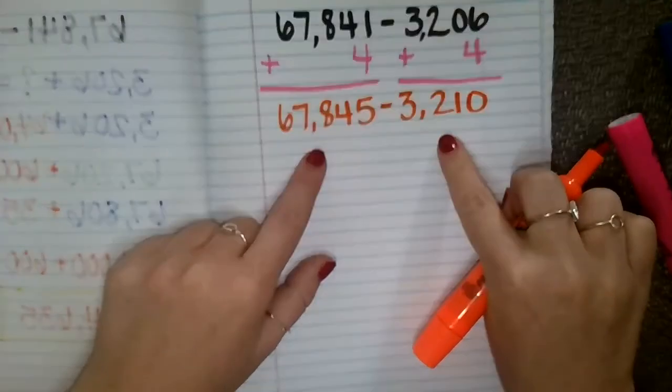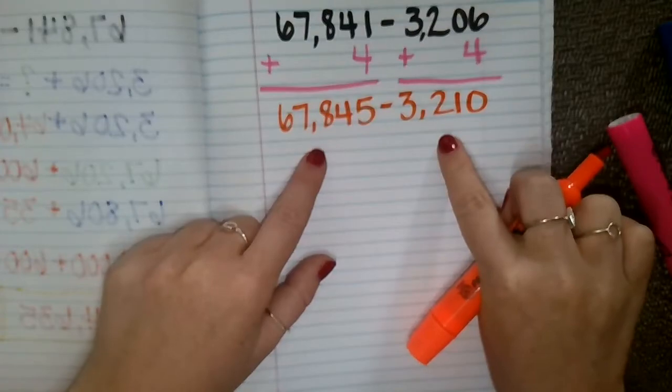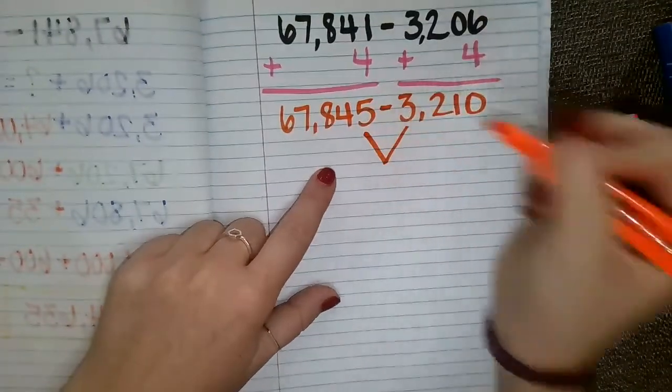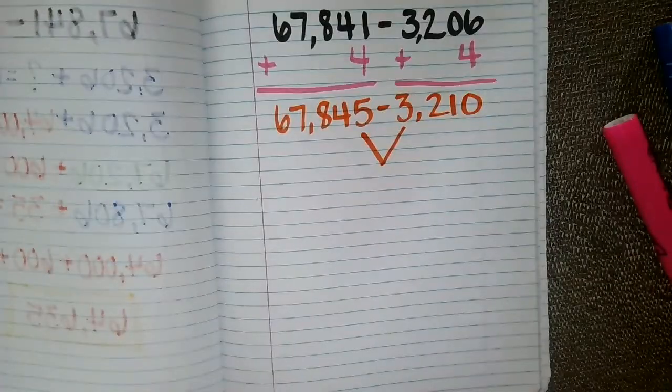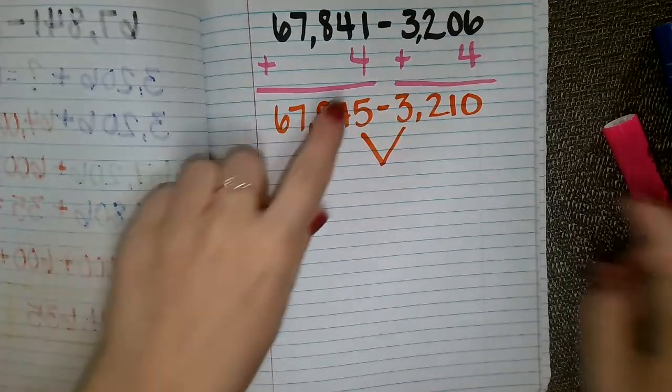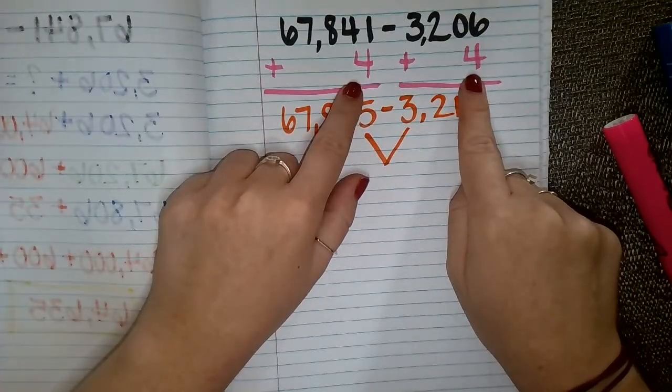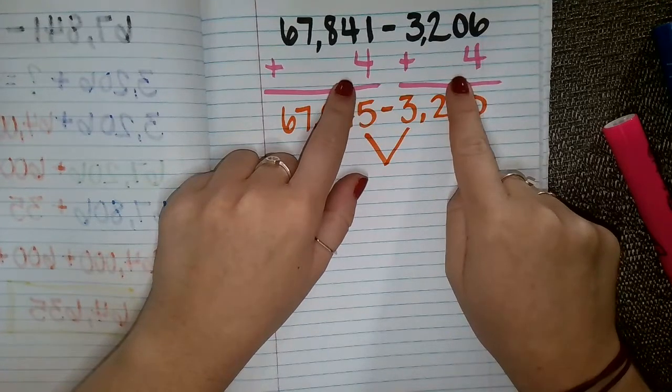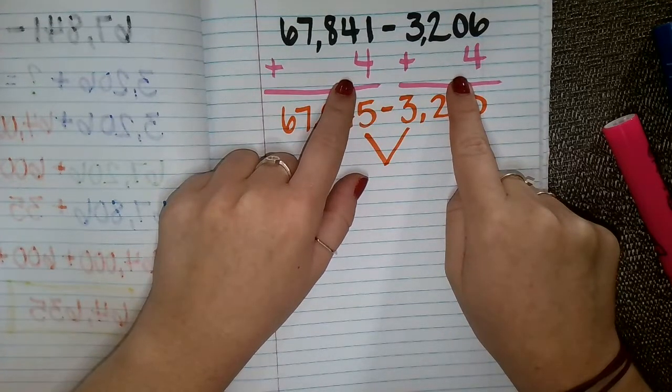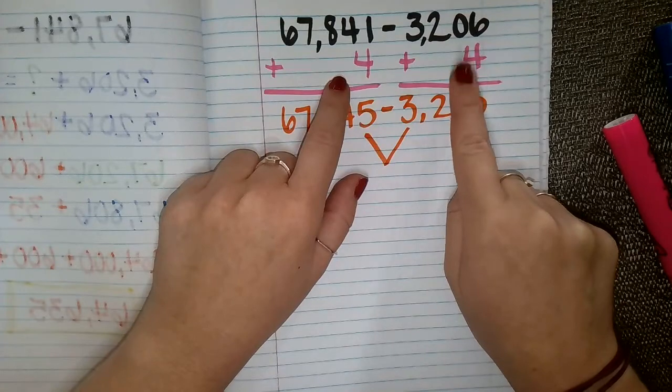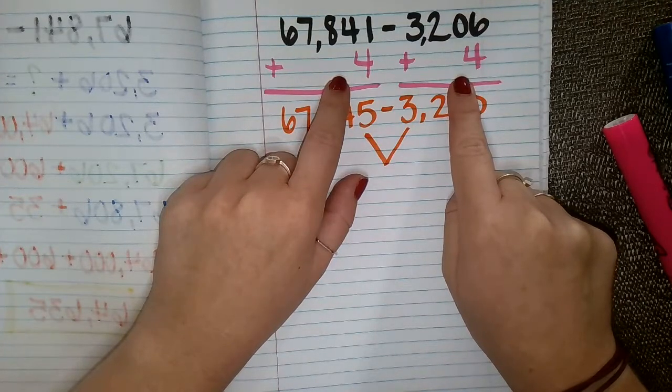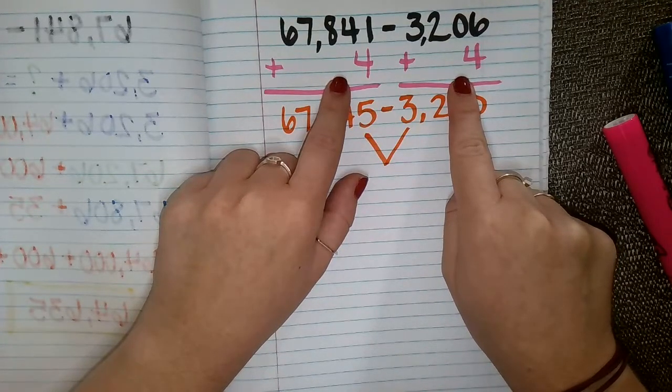So for me, these numbers are just a little bit easier to work with. And then I can subtract. And the great thing about keeping a constant distance between these two numbers is that we won't have to undo this work again, because we added four to this number, added four to this number. So there's still an even distance apart from each other.